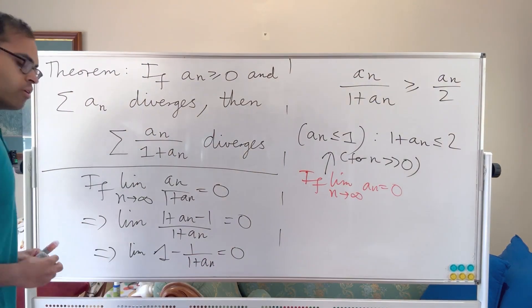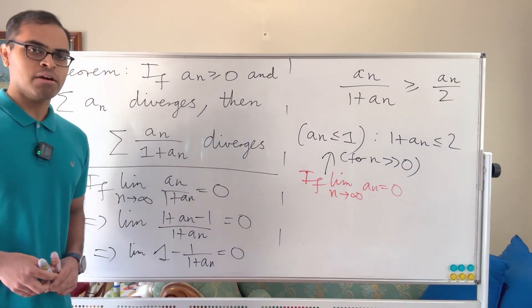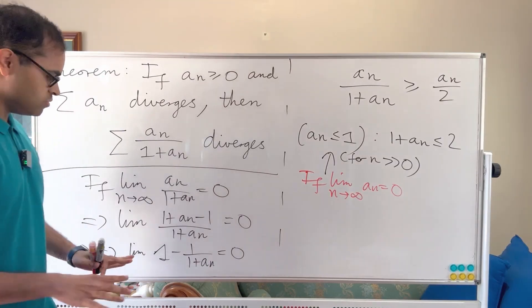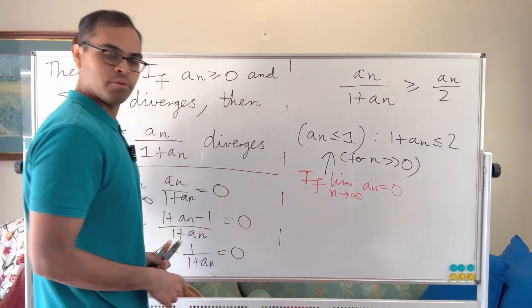So we know that that limit is equal to 0. Now it looks like we can say something about the limit of the ans, right? Because we've just isolated an an term. So let's do that on that side of the board.